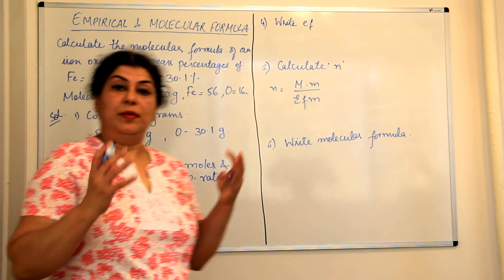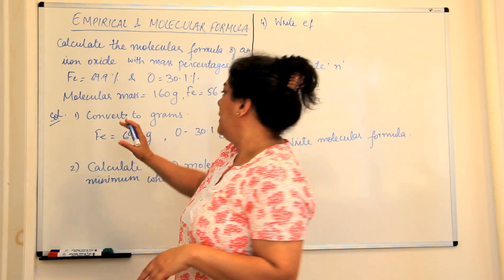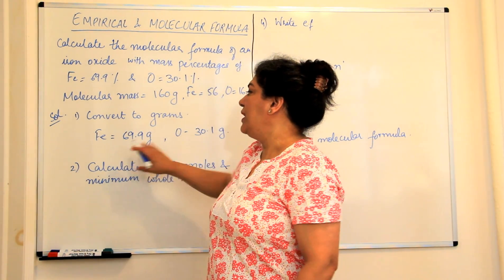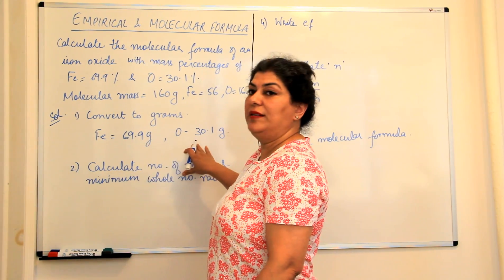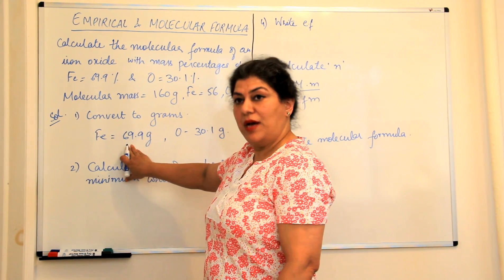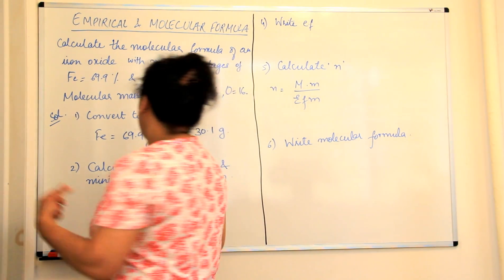Once you get the masses of both the elements or whatever the components are, the elements in grams, we now find out their number of moles. In order to calculate the number of moles, we should write the mass of the element divided by its atomic mass in grams.